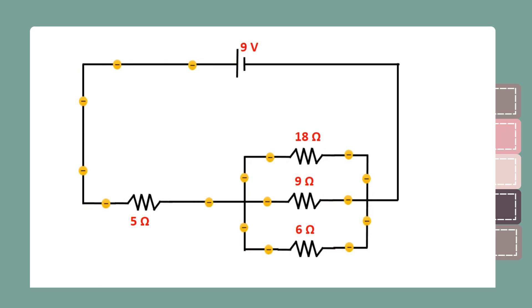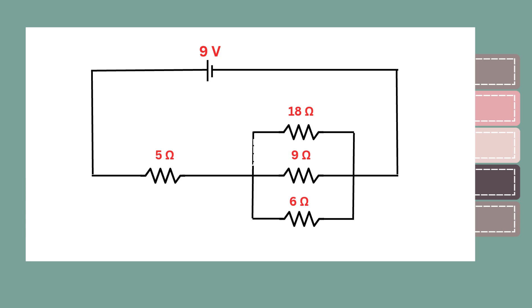Then, the current splits and flows through the 6 ohm, 9 ohm, and 18 ohm resistors. To make it easier to solve this circuit, let's label three points as A, B, and C.